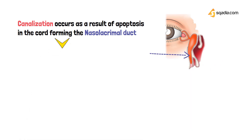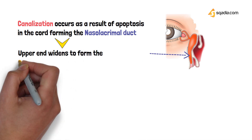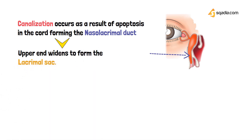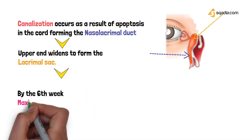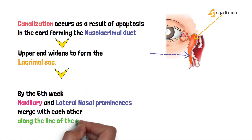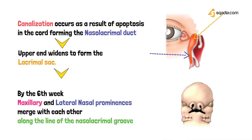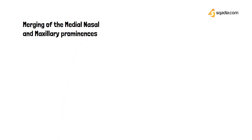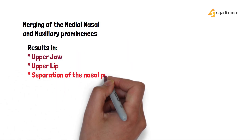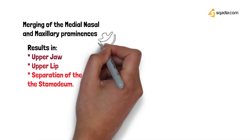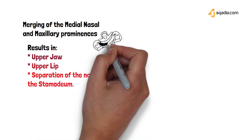The upper end of the nasal lacrimal duct widens to form the lacrimal sac. By the sixth week, the cord detaches and the maxillary and lateral nasal prominences merge along the line of the nasal lacrimal groove. When the maxillary and medial nasal prominences merge, this results in the formation of the upper jaw, the upper lip, and the separation of the nasal pits from the stomodium.